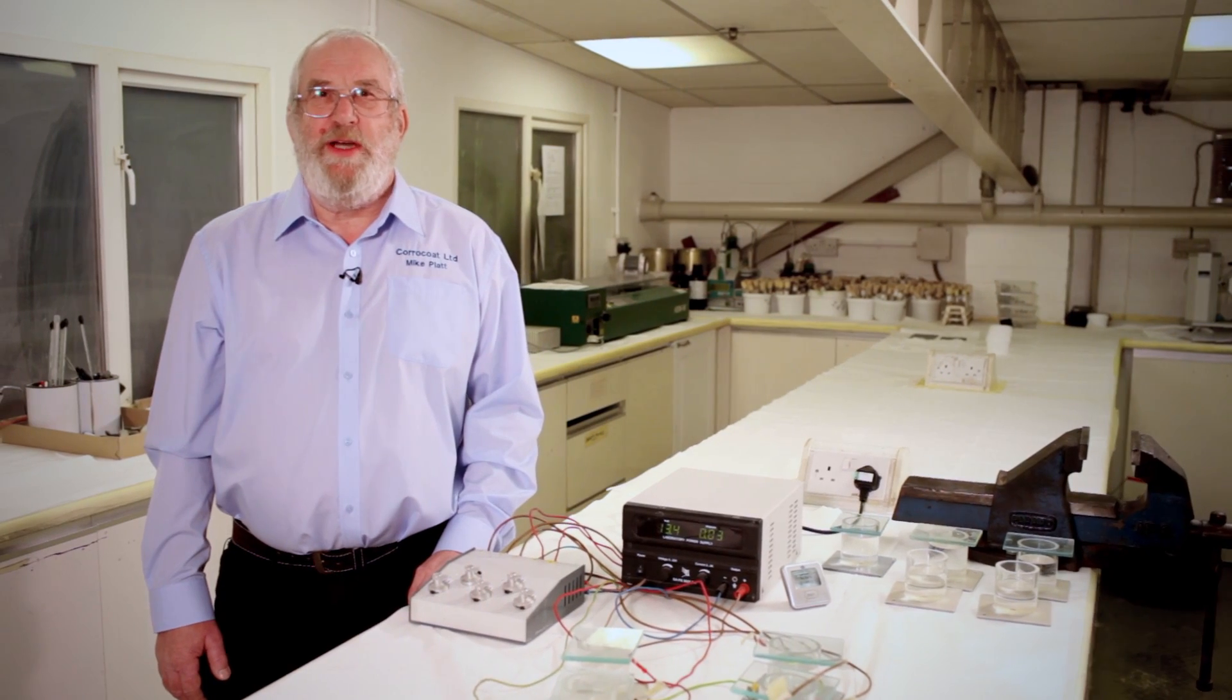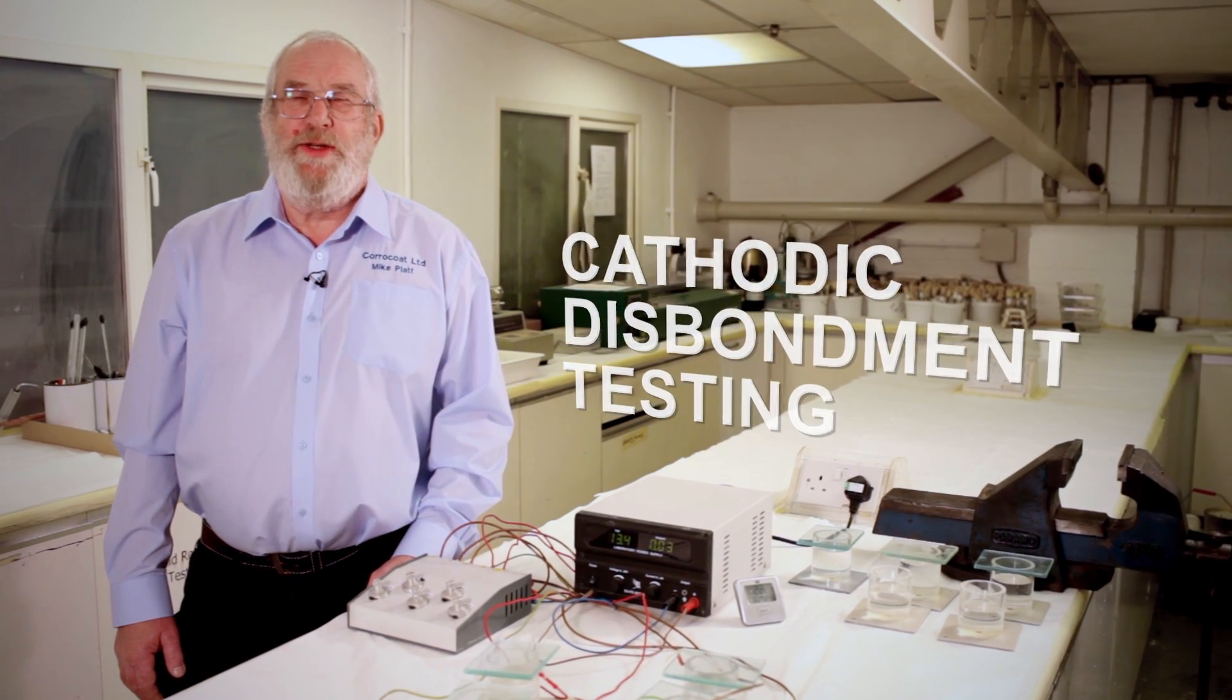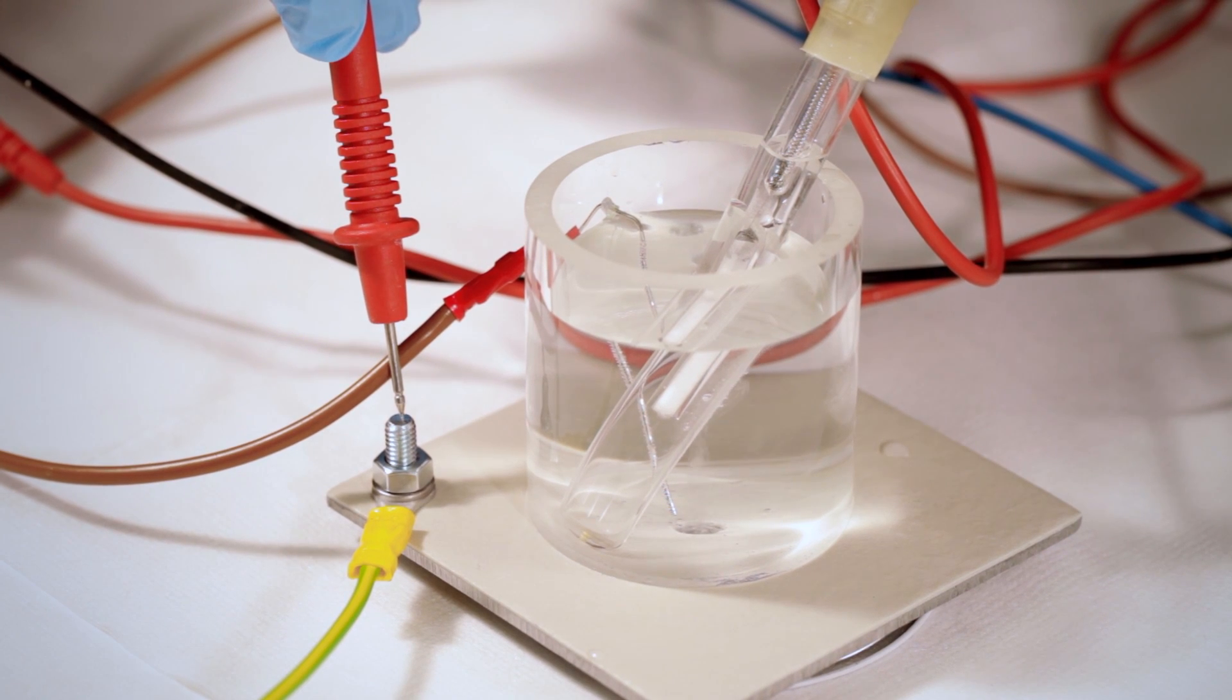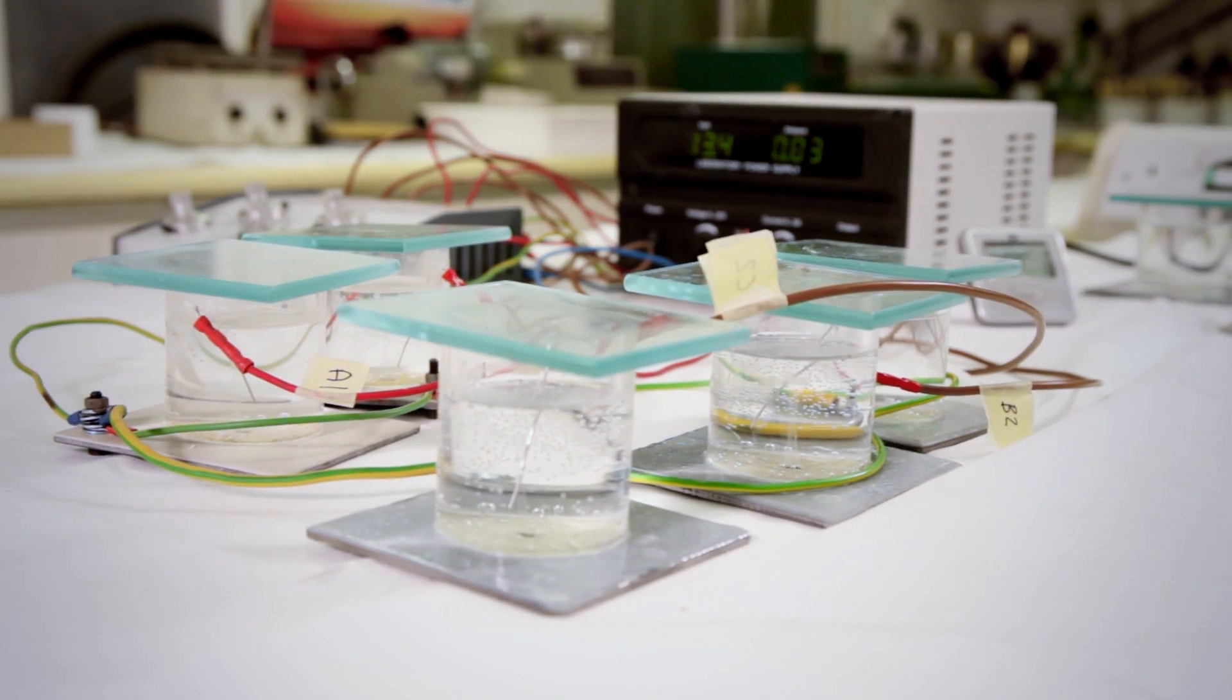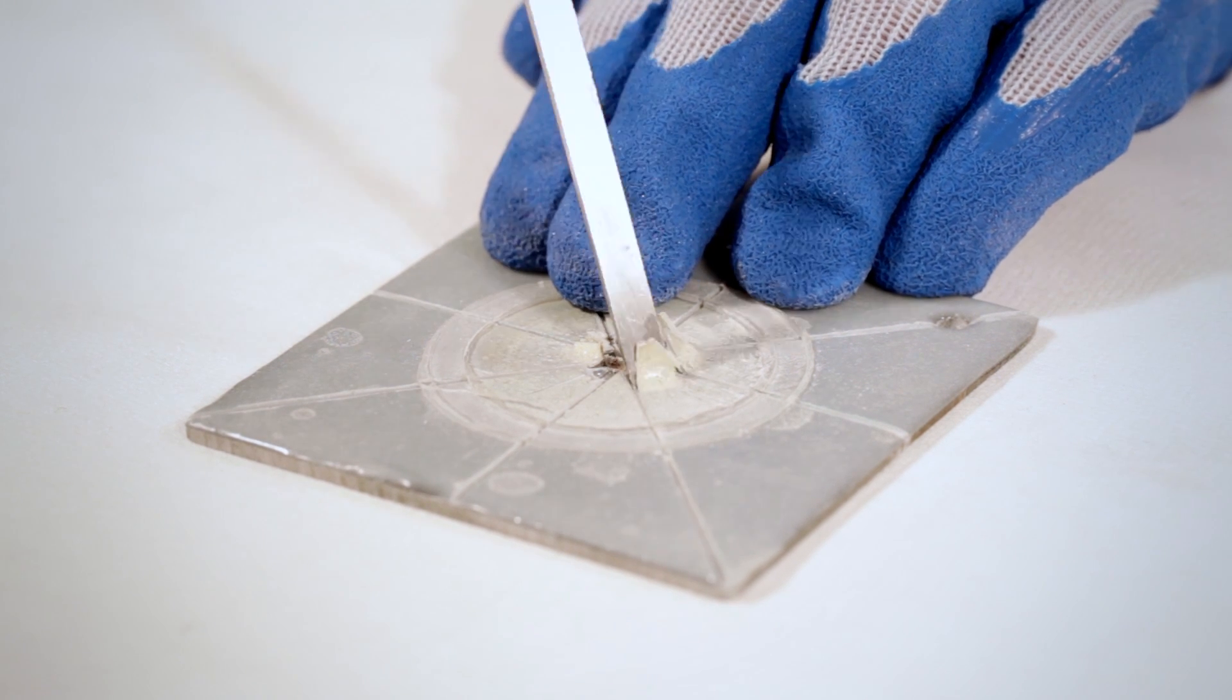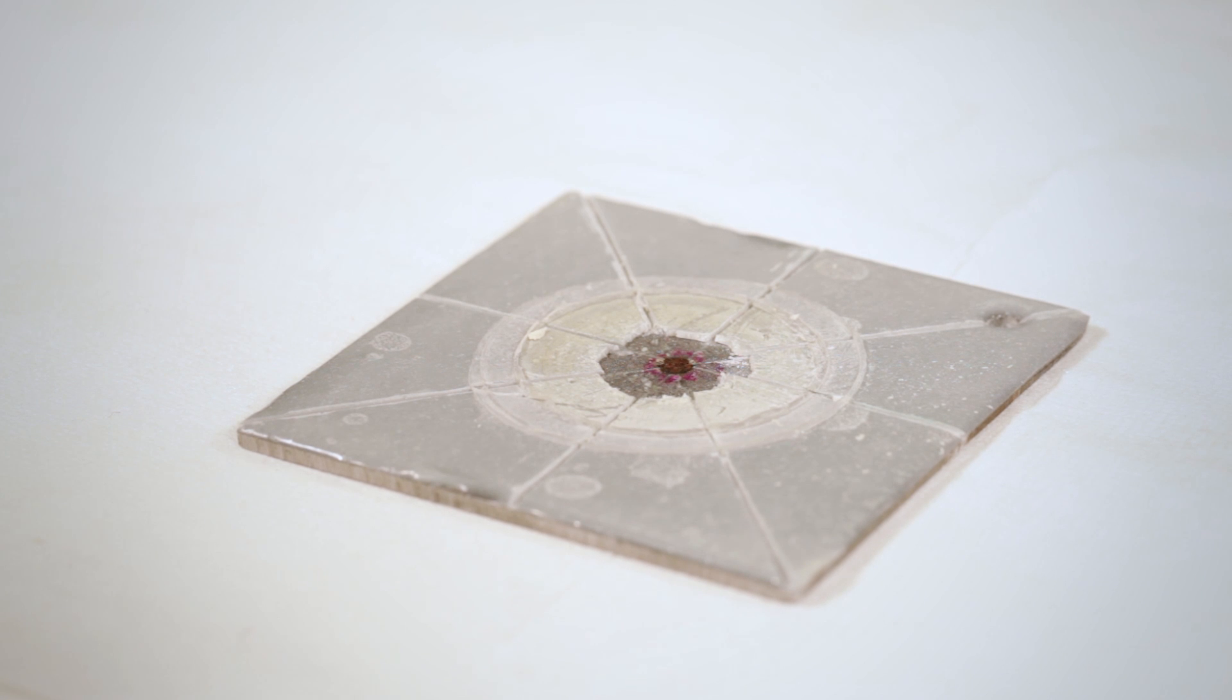This particular video is on the subject of cathodic disbondment testing. Cathodic disbondment testing is one of the tests used for assessing the performance of a protective coating. It's where a coating disbonds due to a cathode reaction at a damaged site through the coating to the substrate. This disbonding occurs by generation of hydroxyl ions which raises pH at the coating substrate interface and causes the coating to disbond.